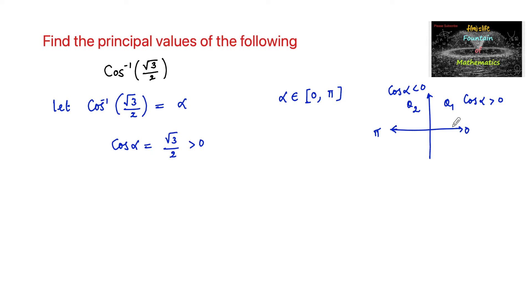So we shall consider the angle alpha in first quadrant, and we know that cos pi by 6, cos 30 degrees, is root 3 by 2.